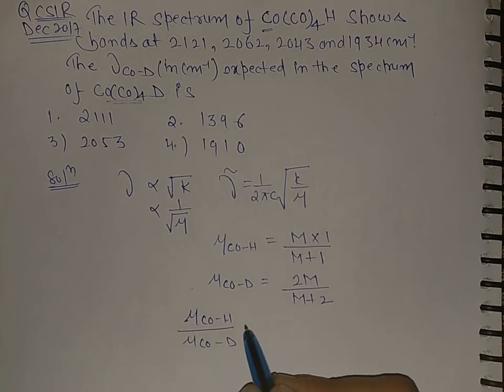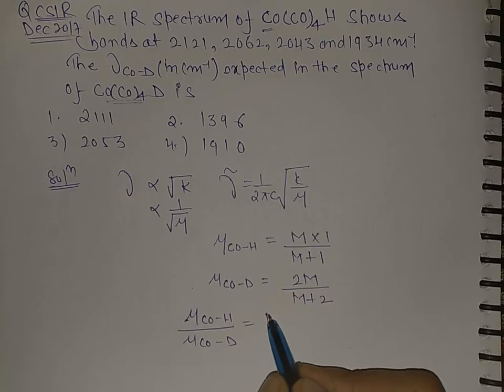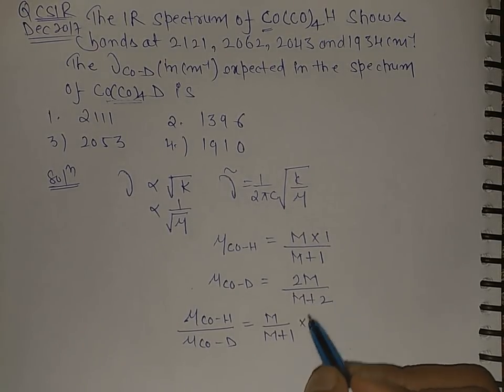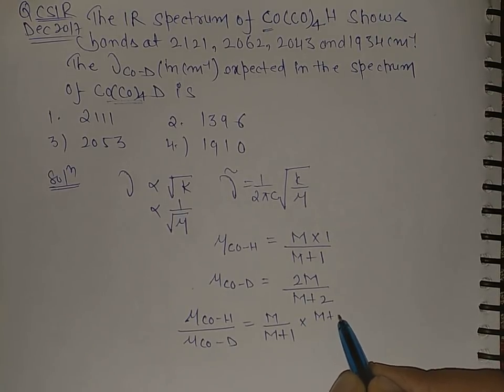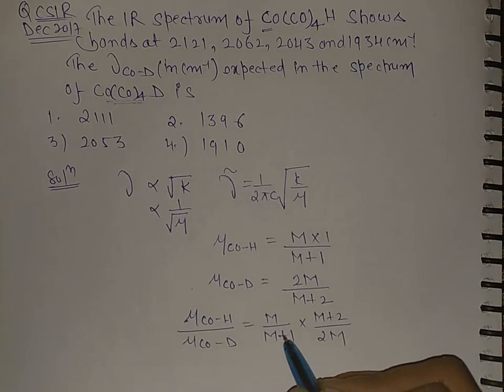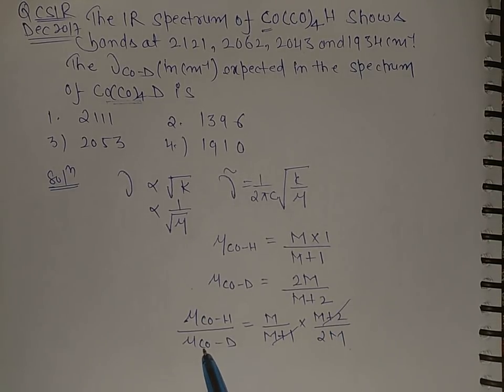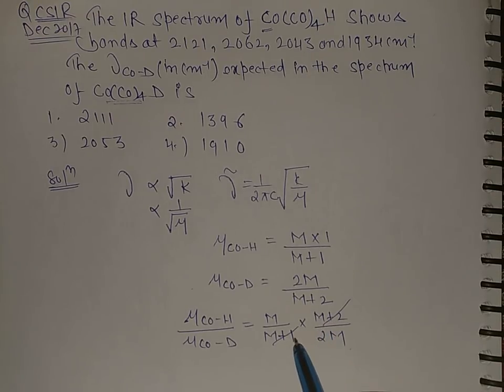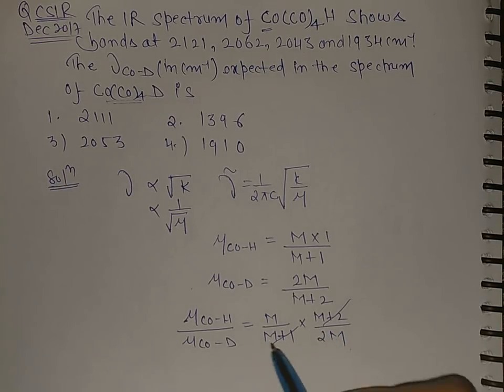Now if we take the ratio, mu of Co-H over Co-D equals to this is M over M plus 1 times M plus 2 over 2M. So this cancels by this, cancels by this, because mass of cobalt is very high. If we add 1 in the mass of the cobalt and if we add 2, they are almost equal.